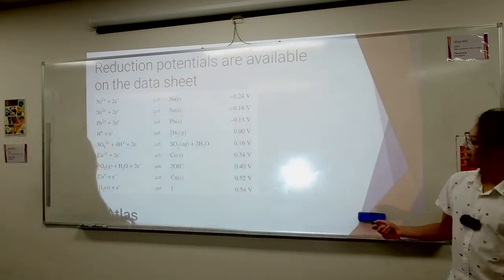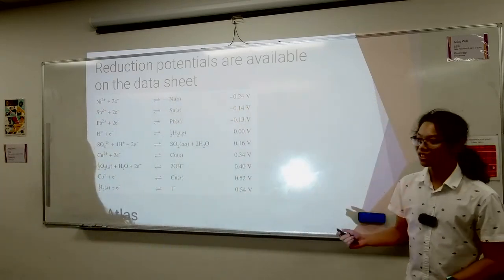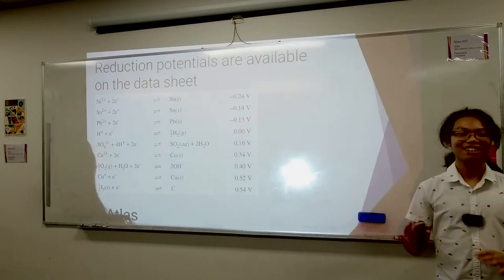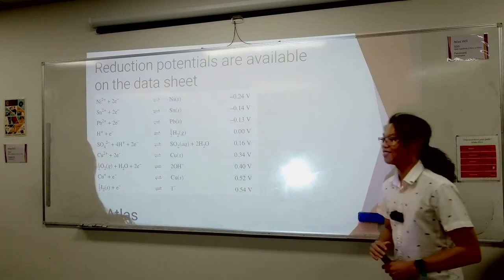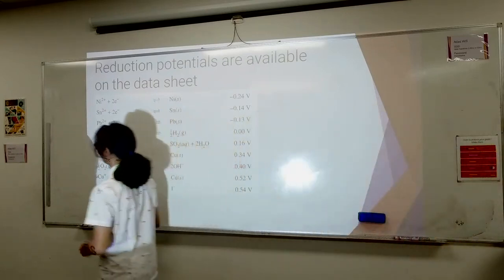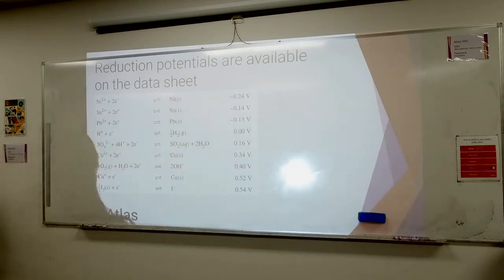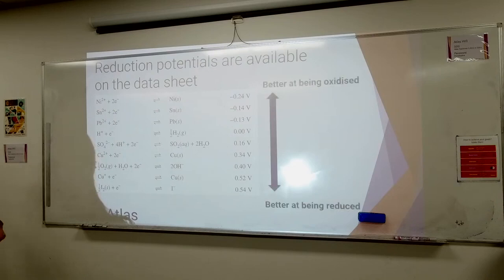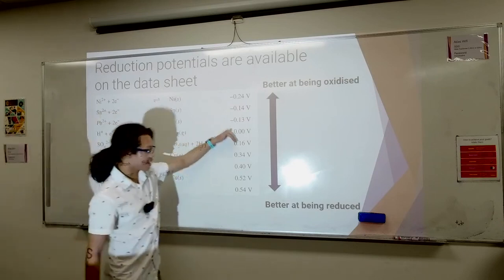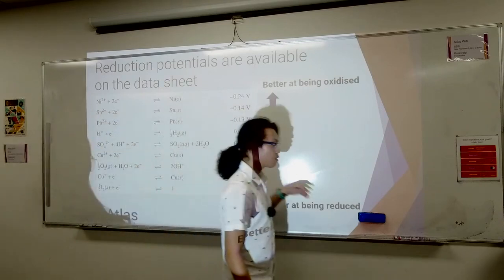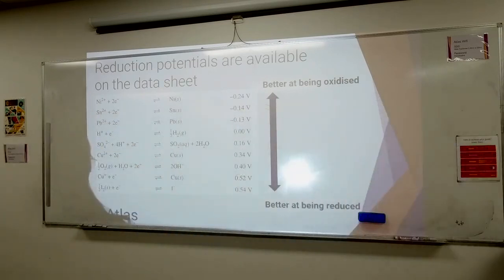Numerically, it has units of volts. Let's not worry too much about that because in chemistry we don't really deal with that. You can probably learn more about what voltage means in physics. But for basic interpretation: the bigger the number, the better at reduction you are. So as you go down this list, you are better at doing reduction.